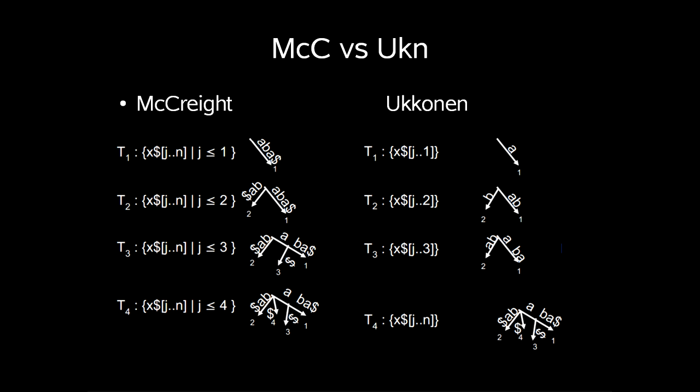Let's look at how McCreight's and Ukkonen's differ for this example x equals aba. We see that the two first trees t1 and t2 are similar,